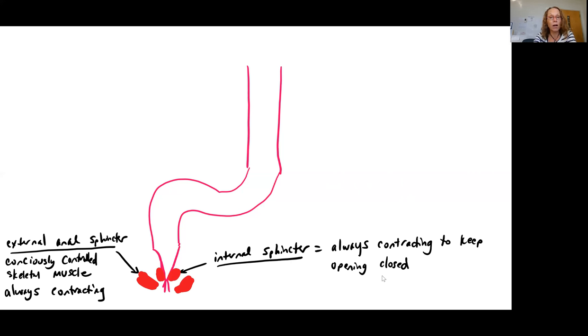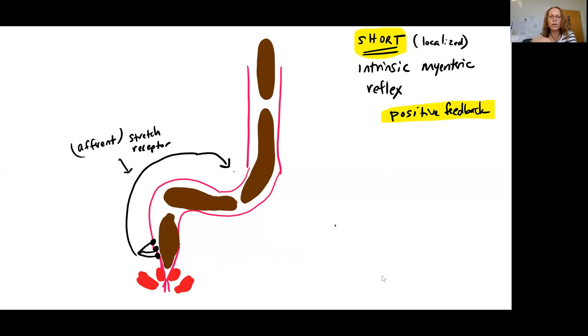This one is also contracting in order to keep the anus closed, but you have to consciously relax the external anal sphincter in order for defecation to occur. So this is where that control over defecation comes into play. Okay, so let's take a look at our reflex mechanism. So we're going to have first a short reflex.